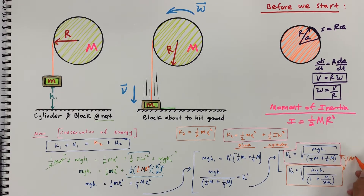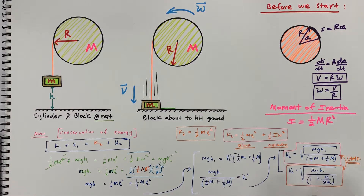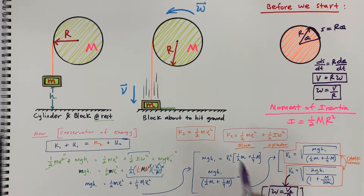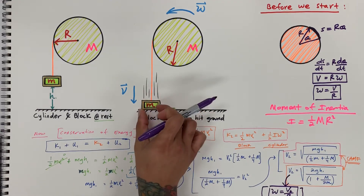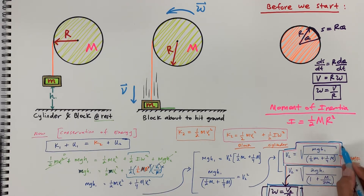Finally, we want the angular speed of the cylinder. Omega equals v over r, so we substitute the expression for v₂ into that formula to get our angular velocity for the cylinder. The velocity v₂ represents the speed of the box right before it hits the ground. These are our two final answers: v₂ for the box and omega for the cylinder.